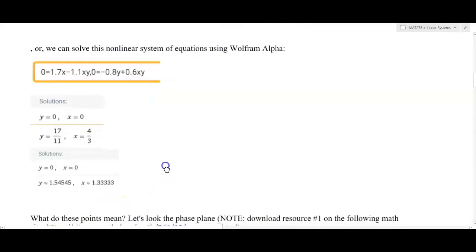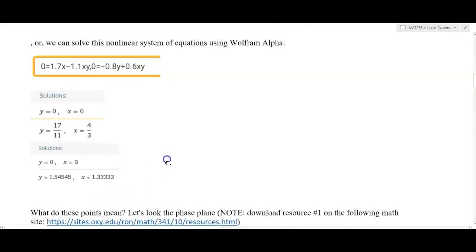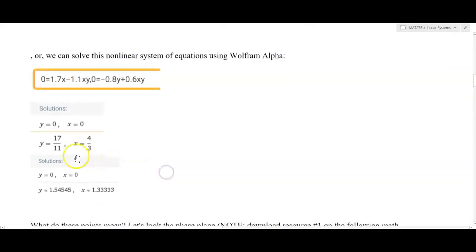So what does this mean? This means that the system is in equilibrium. If both populations are ever zero, there's not going to be any change in the populations because there's no reproduction, nothing happening. And also when x is 4/3 and 17/11, we can think about this as a steady state.